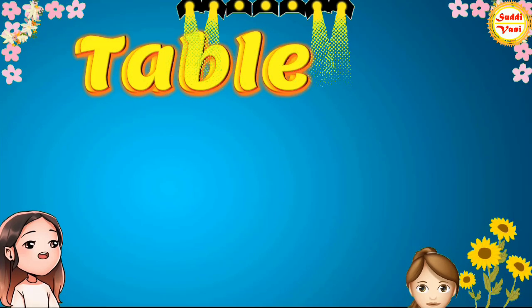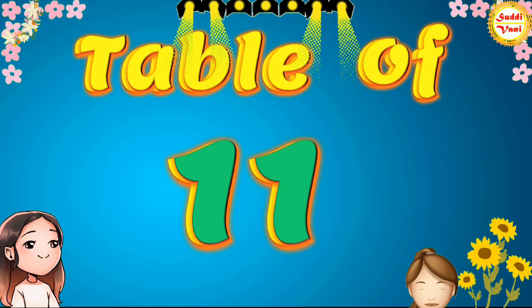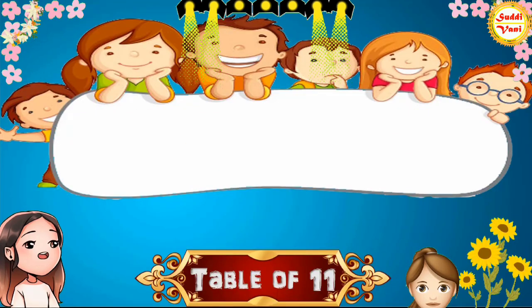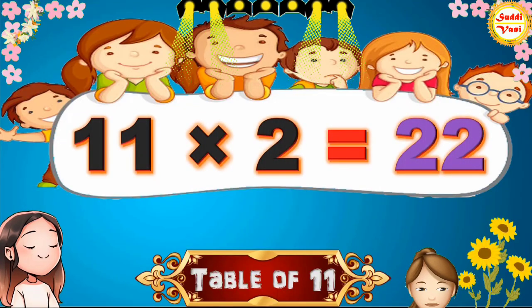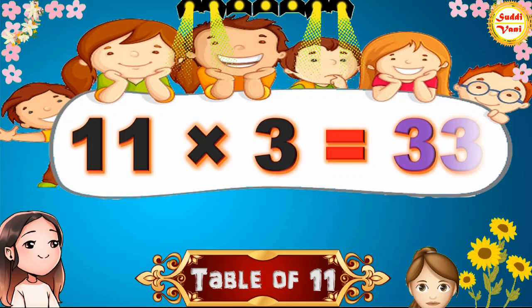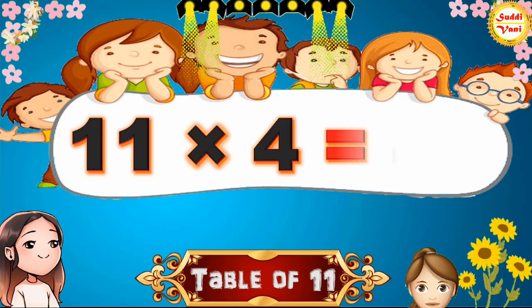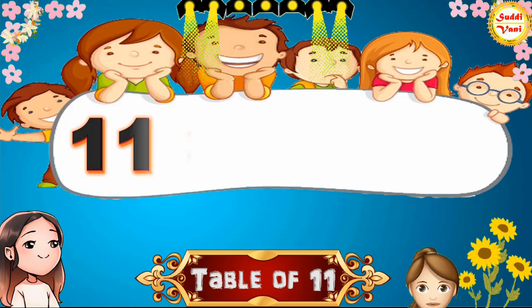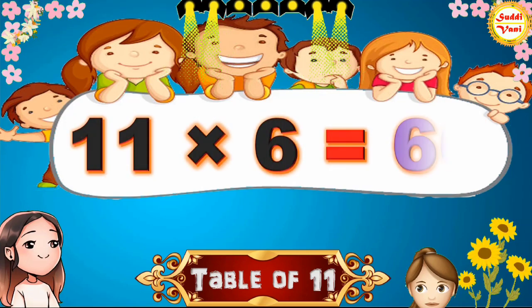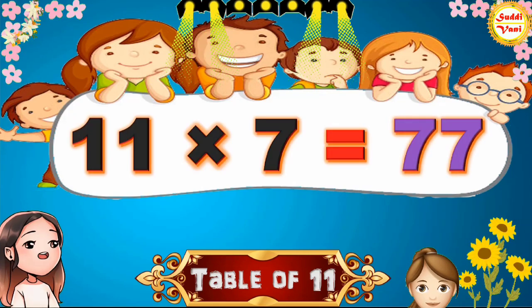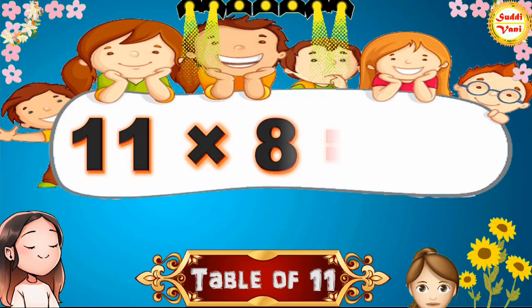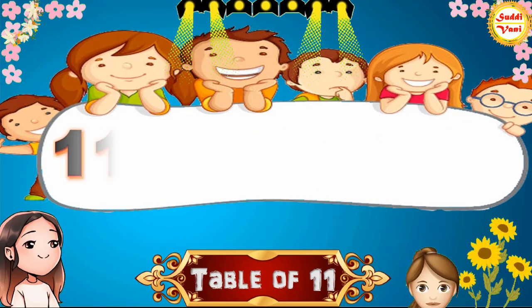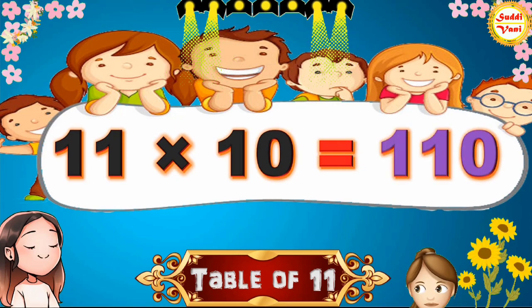Hello children, we will learn table of 11. 11×1=11, 11×2=22, 11×3=33, 11×4=44, 11×5=55, 11×6=66, 11×7=77, 11×8=88, 11×9=99, 11×10=110.